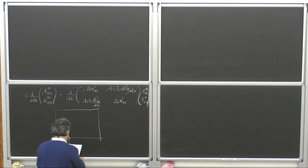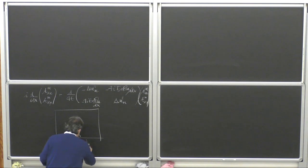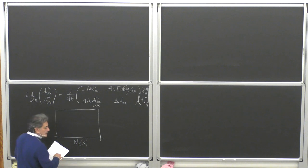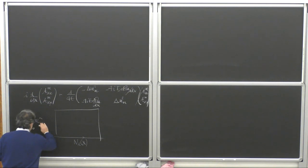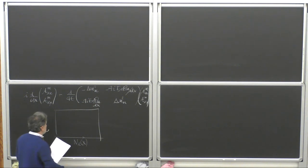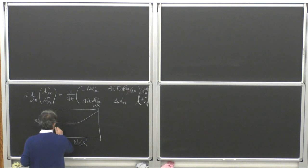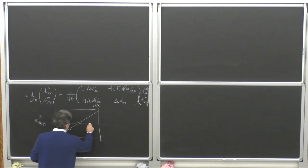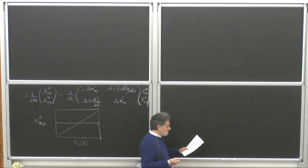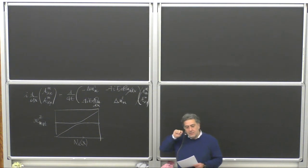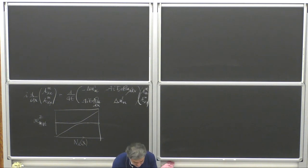Consider the electron density increasing toward the right, and plot the mass eigenstates squared — m1² and m2² — so that delta m² is the difference between them. At higher density, if you consider the formula that gives the mixing angle in matter as a function of the vacuum mixing angle, you find something like this.